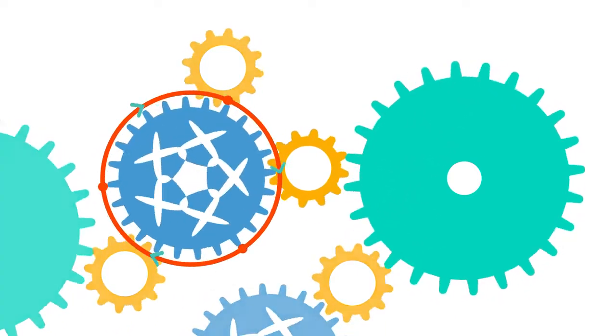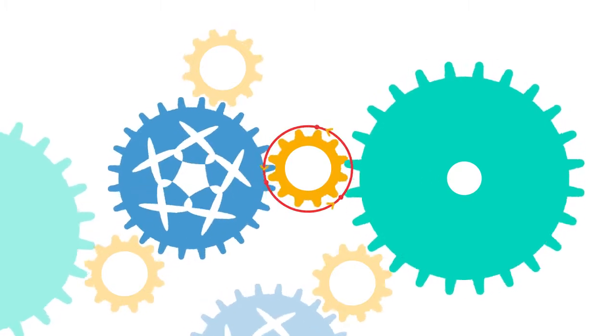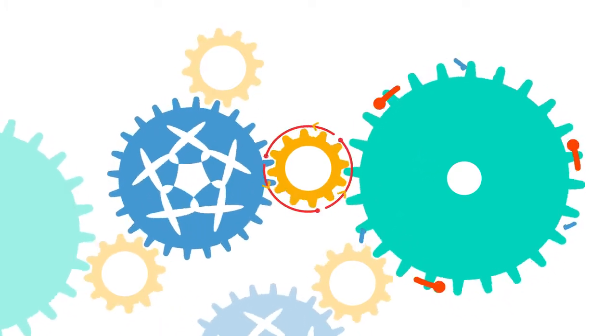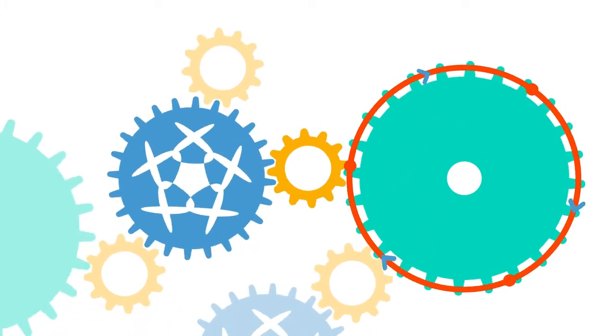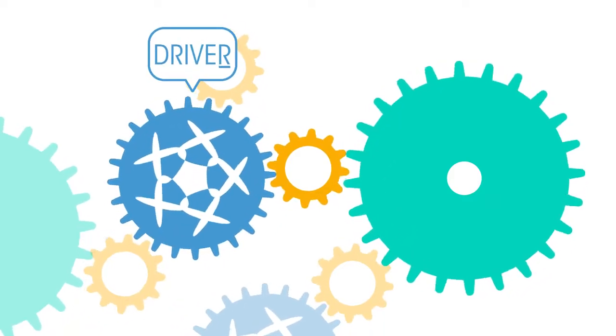If the first gear turns clockwise, then the second anti-clockwise and the third clockwise again. The original gear is called the driver and the other gears are said to be driven.